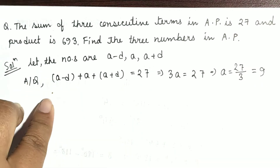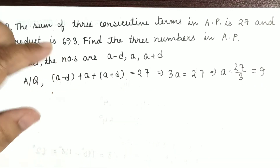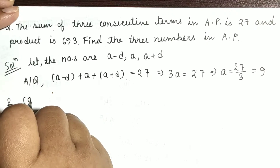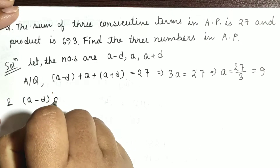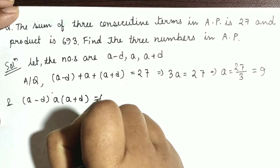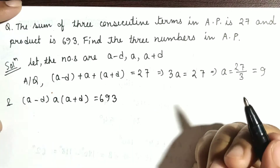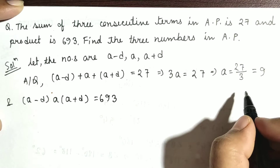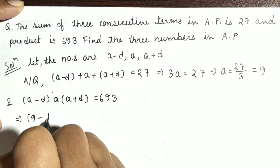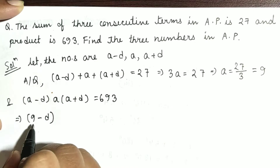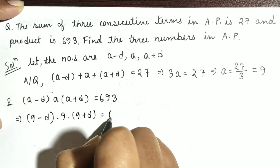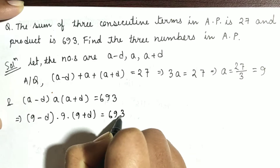Now the next condition given is that the product is 693. That means we can write A minus D into A into A plus D equal to 693. We know the value of A, which is 9, so we can replace the values: 9 minus D into 9 into 9 plus D equal to 693.